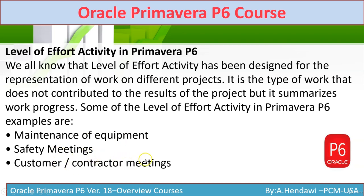Activities like equipment maintenance, safety meetings, customer management, and procurement commonly use Level of Effort to represent them. For example, if you have a procurement activity spanning nine months and don't have details, you add a procurement activity in P6 and use Level of Effort to represent that work. You can tie it start-to-start and finish-to-finish with its predecessor and successor.